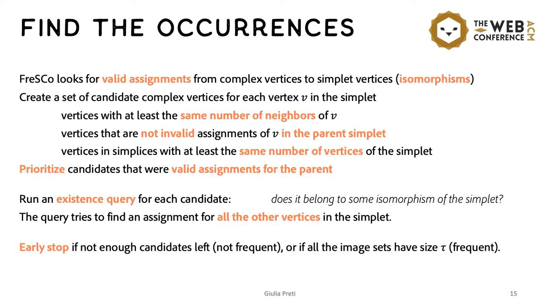In order to find the occurrences, we just have to run some existing queries that try to assign candidate complex vertices to simplex vertices. And so for each simplex vertex, we have a set of candidates and we examine all the possible combinations that satisfy all of the membership constraints. And we stop as soon as we can answer the question, is the simplet frequent or not? And so we don't need to find all the occurrences.